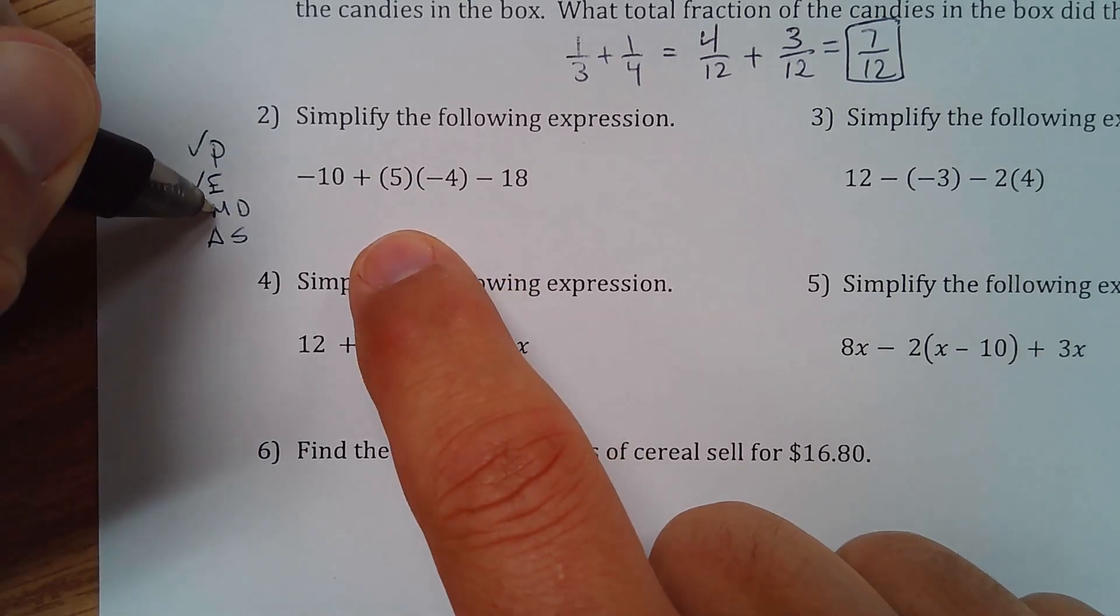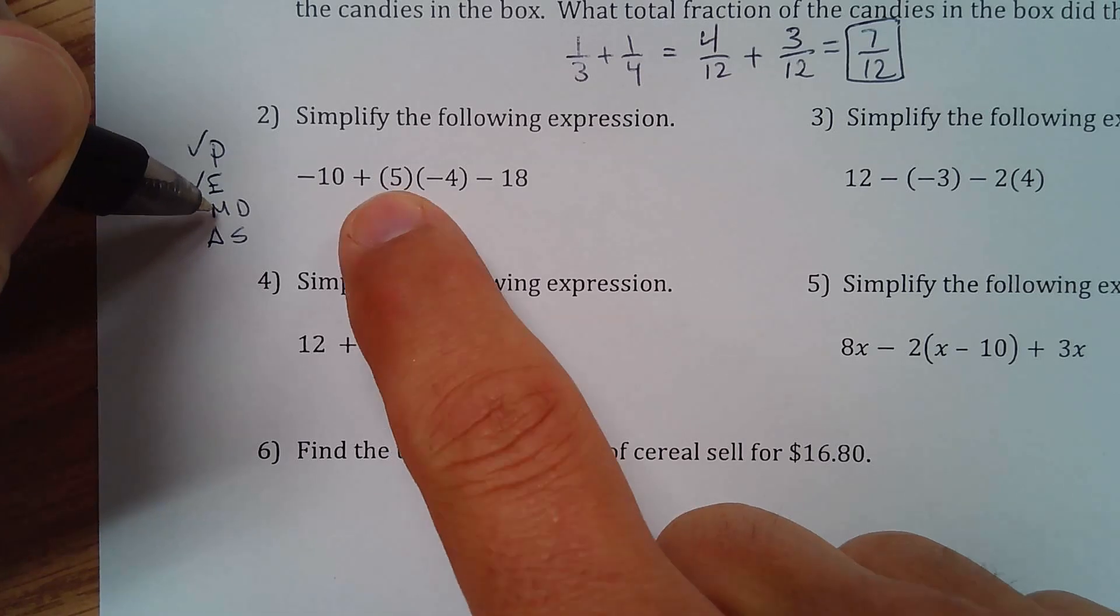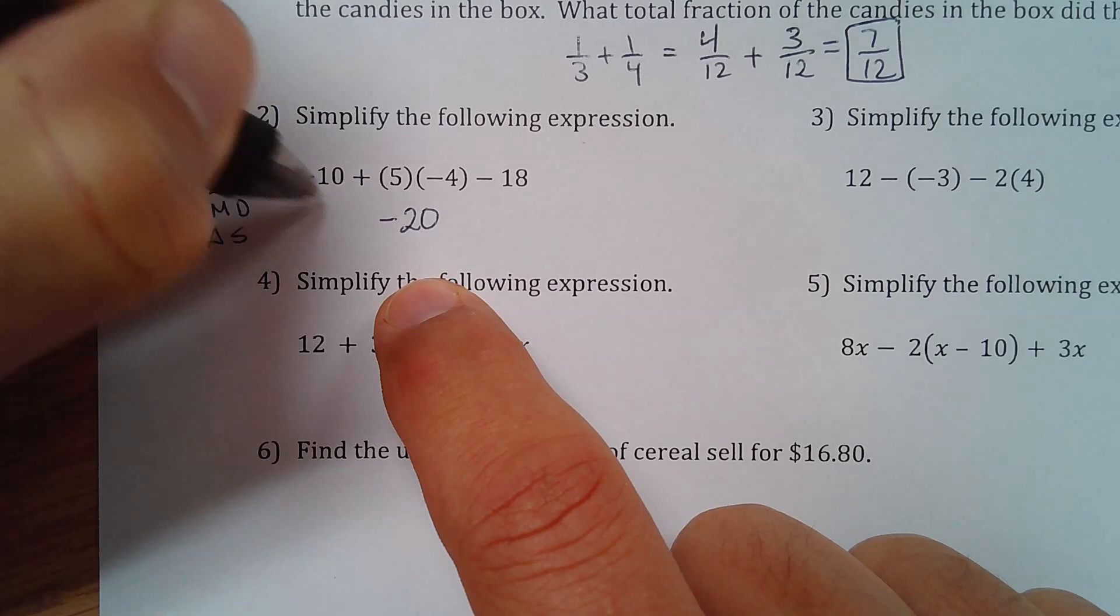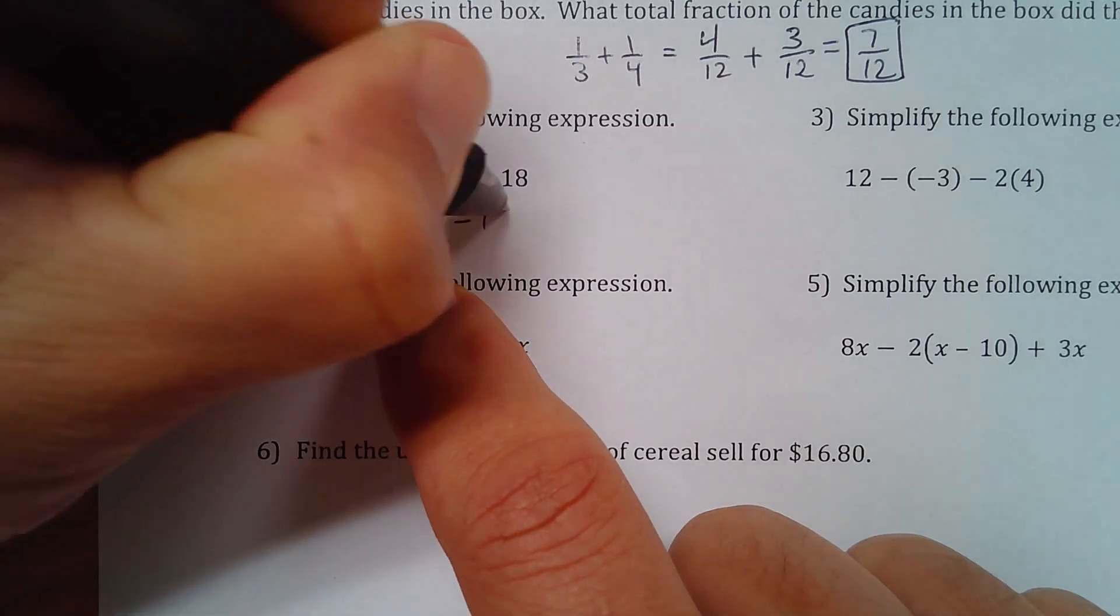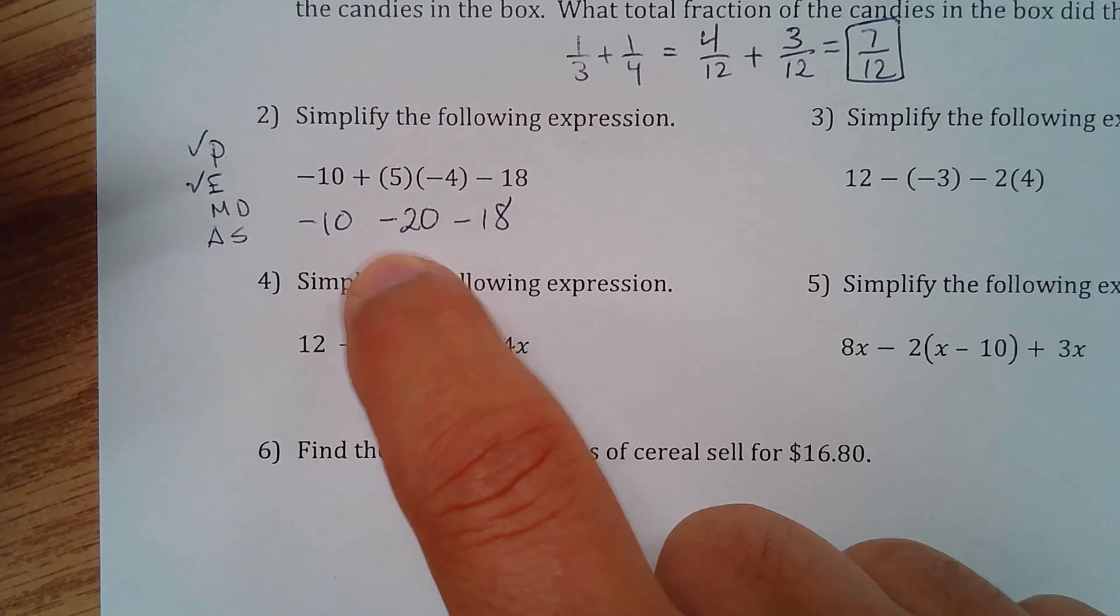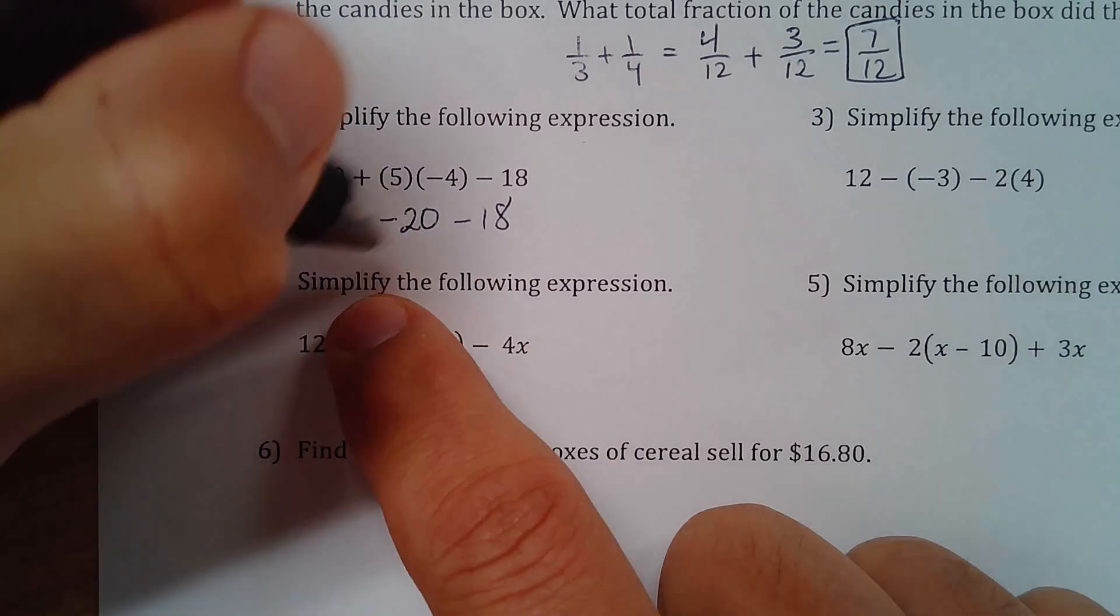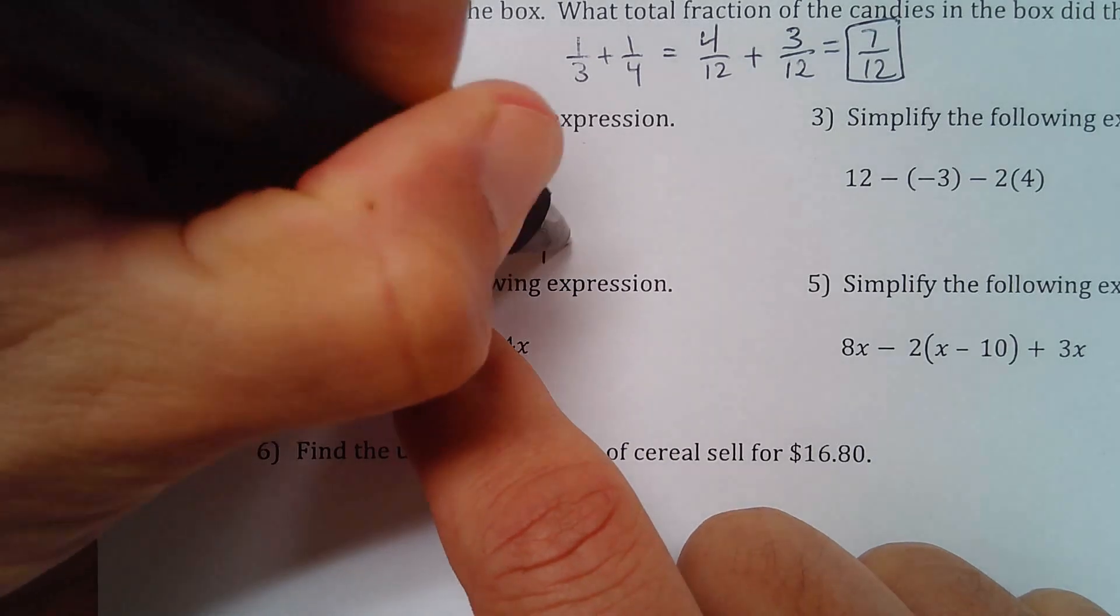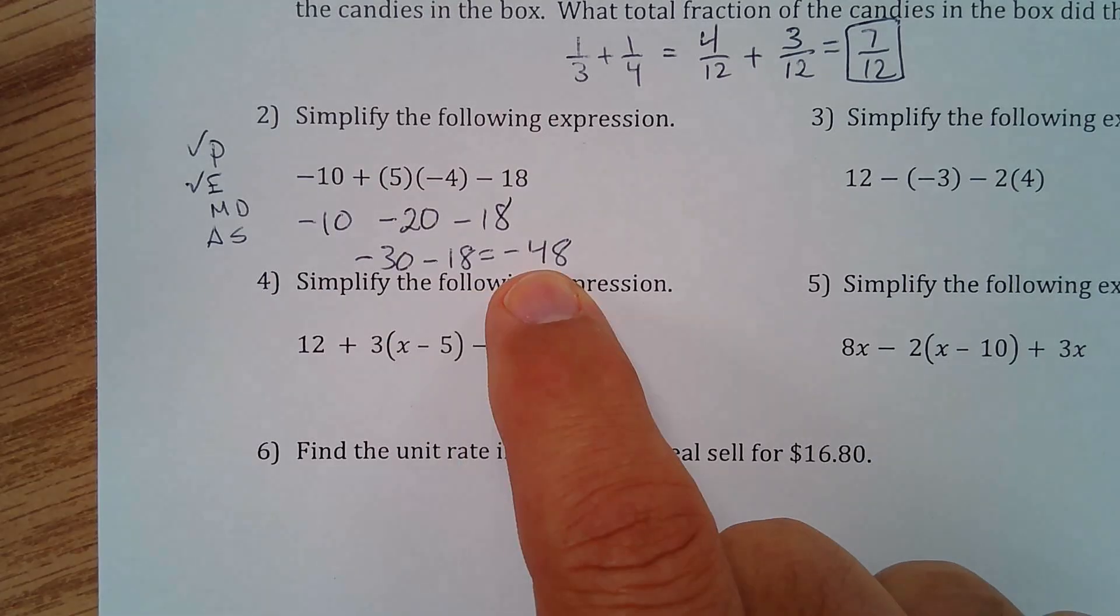So parentheses done. Exponents. There are no exponents. We multiply. Let's see. 5 times negative 4. 5 times negative 4 is negative 20. And I'll just write down the rest. Negative 10 minus 20 minus 18. Negative 10 minus 20. That is negative 30. And then negative 30 minus 18 is negative 48.